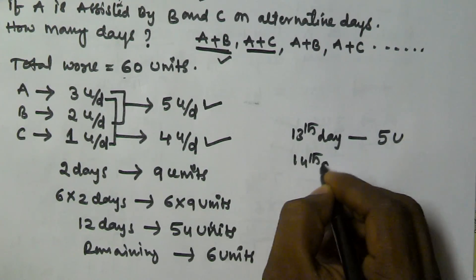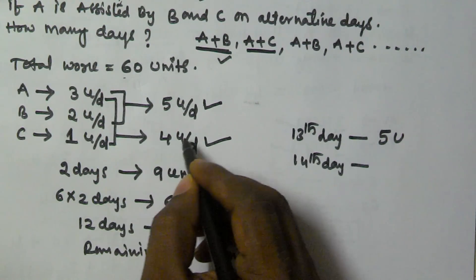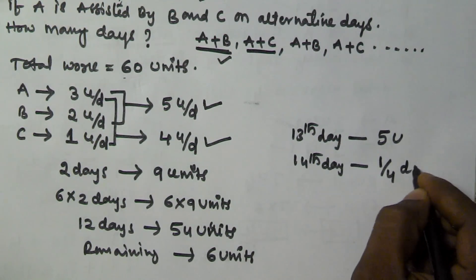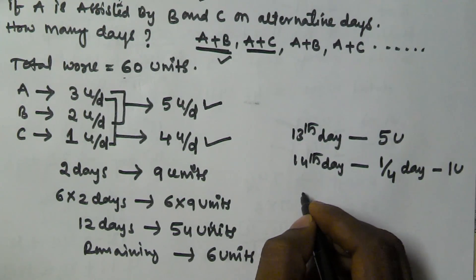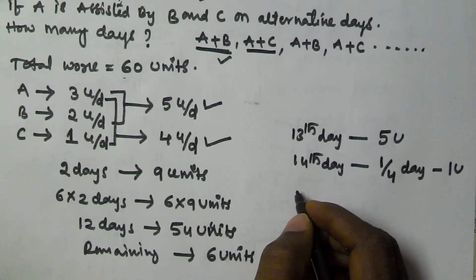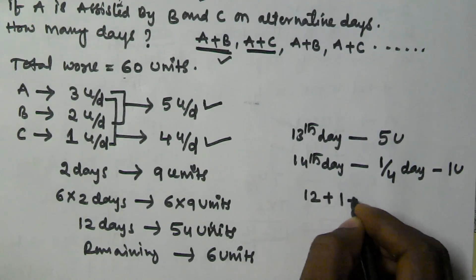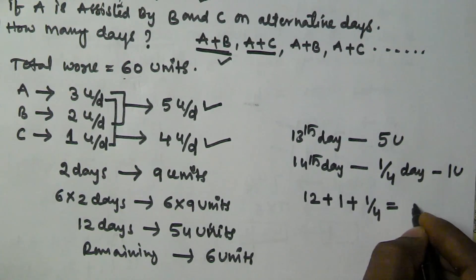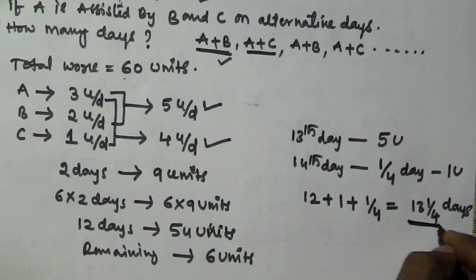On the 14th day A and C will work together. A and C together will finish 4 units per day. To finish the remaining 1 unit they will take 1/4 of a day. So the total number of days taken, if A is assisted by B and C on alternative days, is 12 days plus 1 day (the 13th day) plus 1/4 day, which equals 13 and 1/4 days.